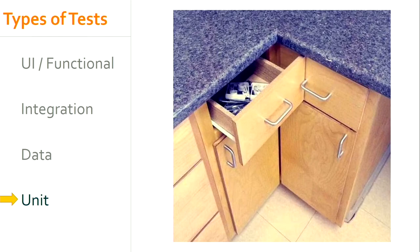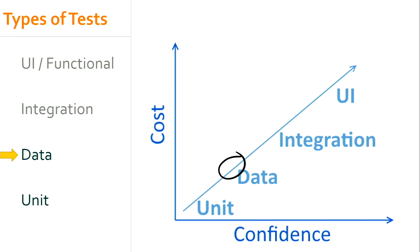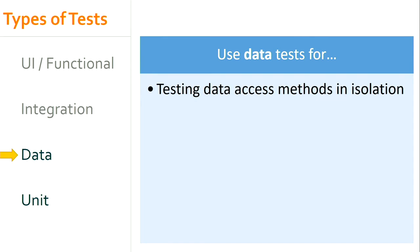One way to increase confidence is to have tests hit an actual database. Some teams say any test involving a database is an integration test, but I differentiate between a data test and an integration test. A data test is basically a unit test of the data access layer — it's a tiny piece of functionality but you're hitting a real database. We still don't know if the application will layer those data units together, but at least we know the queries are going to work — the syntax is valid, it'll hit the database. Data tests are ideal for testing database things where you need a real database, though they're more costly and slower to run.